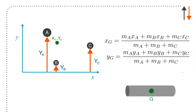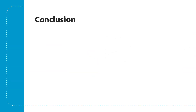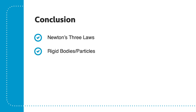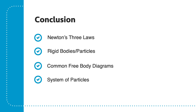A rigid body — like a rod — where G is a defined point is more interesting than arbitrarily positioned particles. So to summarize what we covered today: Newton's three laws, the distinction between particles and rigid bodies, free body diagrams, and systems of particles. The key takeaway is that you really need to spend a lot of time on free body diagrams — they're crucial in this course. Thank you.